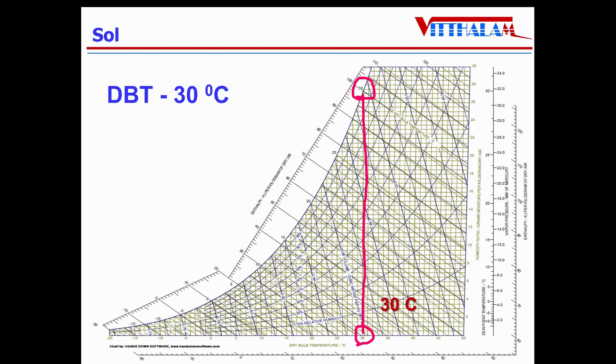So first property given is dry bulb temperature that is 30 degrees Celsius. So this is the 30 degrees Celsius vertical line of DBT. Now the point can be anywhere on this vertical line. And to locate the point, obviously second property is required. And the second property of the air given is RH which is 60 percent. So if you follow the RH curve of 60 percent, the intersection point is the state of the air which is available. Now from this point we can find out the different properties. So this is the state.